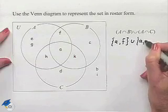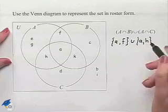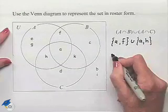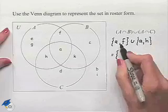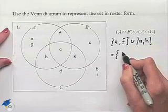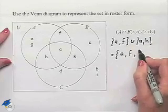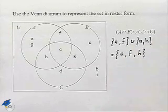And so we'll list that. Now the union of these two sets will be the set containing any element that we see listed. We'll have A, F, and H as part of our union.